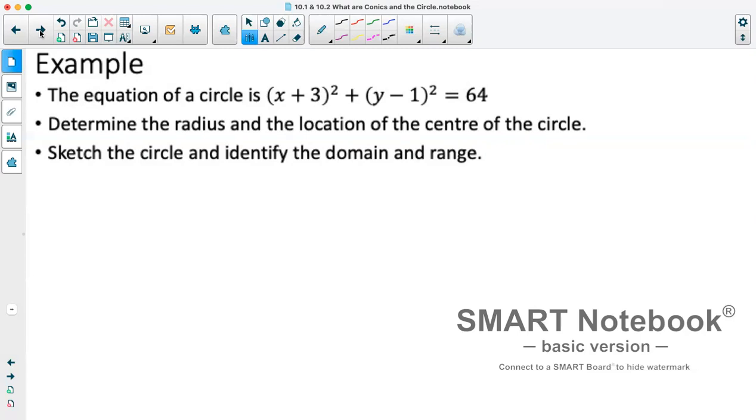So first thing I'll do is compare this with our equation from a previous page. Okay, so first thing asked about is radius. We can see that this 64 corresponds to our r squared. So if we take the square root of 64, we get a radius of 8.